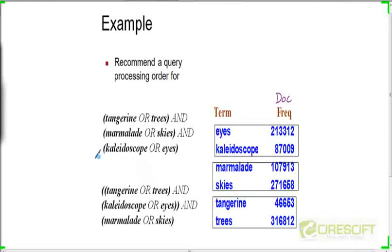So whoever tries to answer could you also announce your name? Hello sir, my name is Aditya. I think it should be eyes and kaleidoscope first because that's approximately 29,000, followed by tangerine and trees because that's something like 36,000, and the last one which is approximately 38,000.